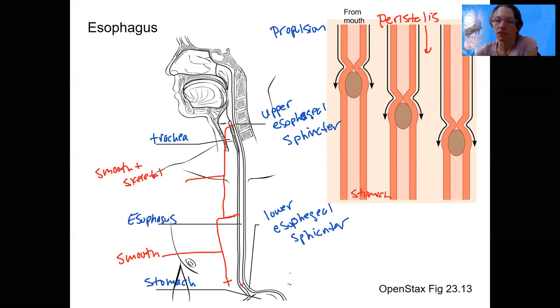And this happens via contraction of muscle in coordinated patterns that allow for movement in one direction. We will see another kind of movement in the small intestine that's not just in one direction. Typically in the digestive system, we want to go one direction.